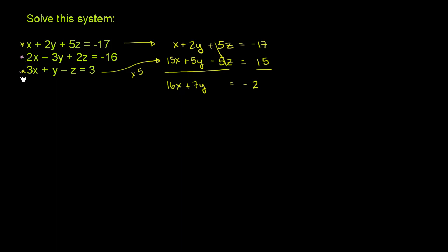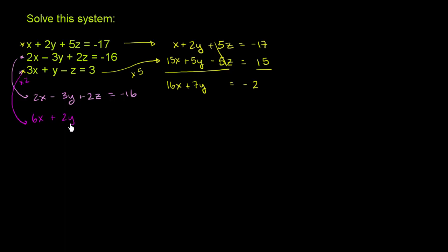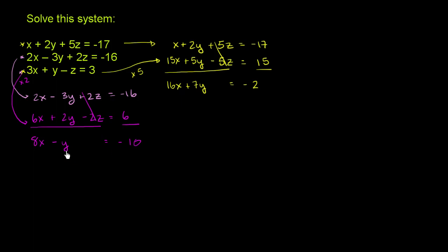Now using the second and third equations to eliminate z. We have 2x minus 3y plus 2z equals negative 16. Multiply the third equation by 2: 2 times 3x is 6x, 2 times y is plus 2y, and 2 times negative z is negative 2z, equal to 6. Adding these two equations: 2x plus 6x is 8x, negative 3y plus 2y is negative y, the z terms cancel, equal to negative 16 plus 6, which is negative 10.